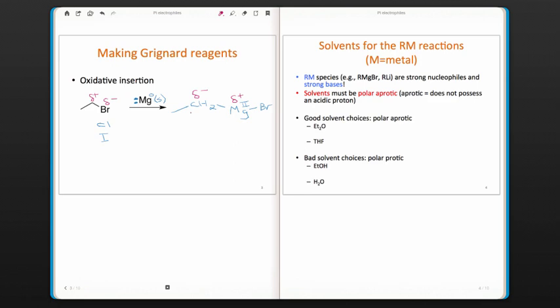It's important to remember that those RM species, like Grignard reagents and organolithium reagents, are strong nucleophiles, but they're also strong bases. So we have to make sure that any solvent we use to dissolve the reagent and allow the reaction to continue must be polar aprotic. Polar means that the molecule has a dipole. Aprotic means that the molecule does not have an acidic proton, usually a proton on a heteroatom.